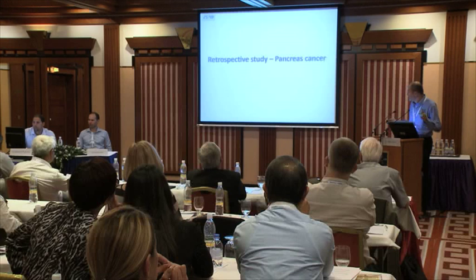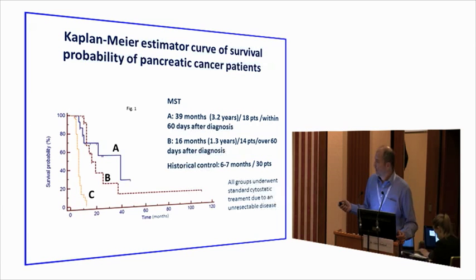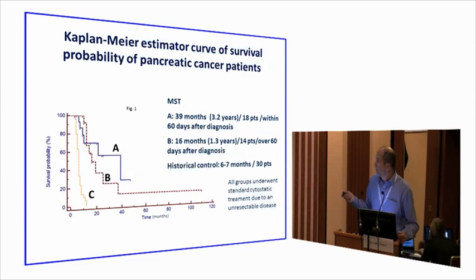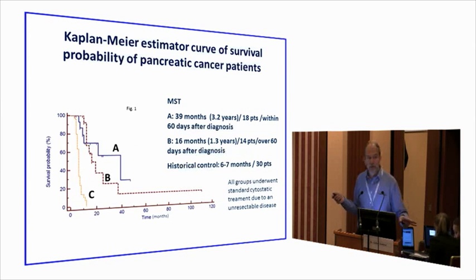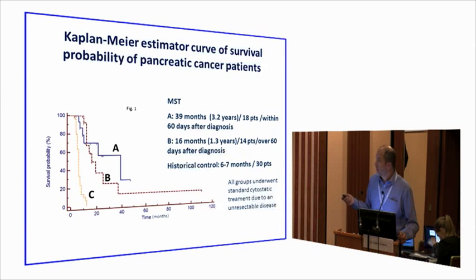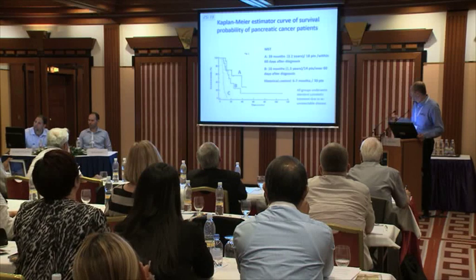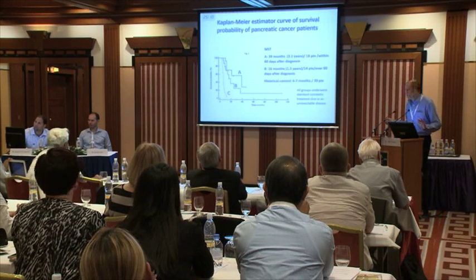One of the worst tumor types is pancreatic cancer. With Professor Boros, we presented at the AACR conference in San Diego. We had 18 patients who started within 16 days of pancreatic cancer diagnosis — median survival time was 39 months. Those who started later than 60 days had a median survival time of 16 months. The historical control is extremely poor: six to seven months.